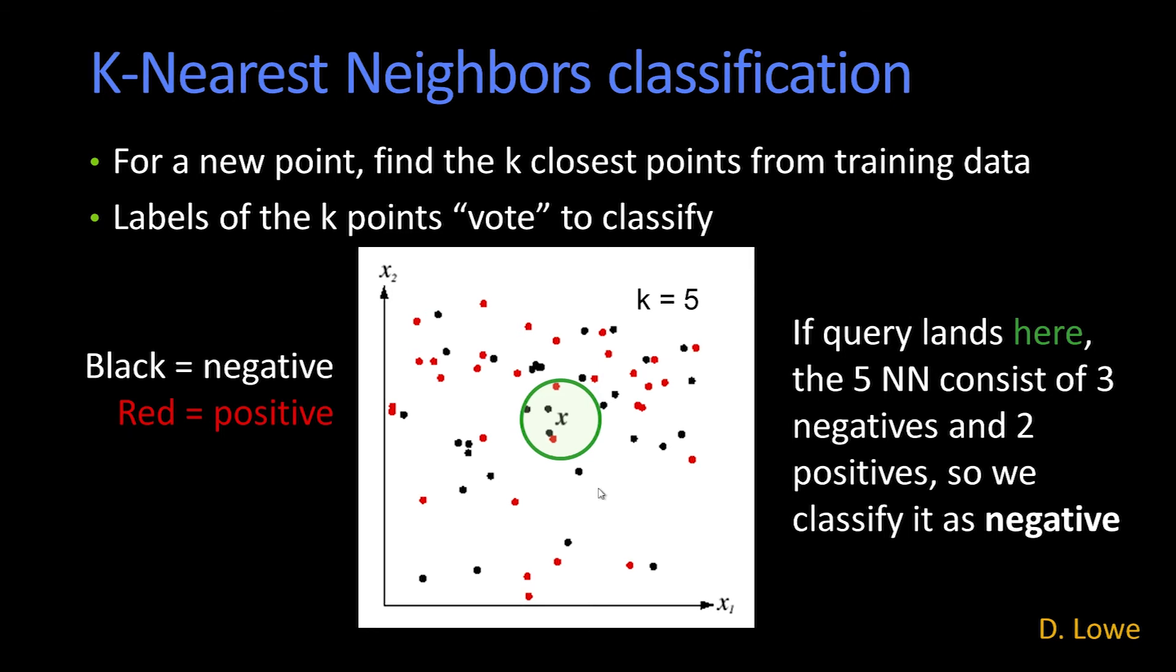So in KNN and 5NN, for example, if I have this point X, what I'm going to do is I'm going to look for the 5 nearest neighbors. And I'll just, 1, 2, 3, 4, 5. And in this particular case, 3 of them are black, 2 of them are red. Black is negative, red is positive, so I would classify it as what? Negative.